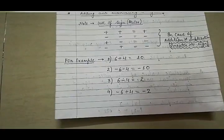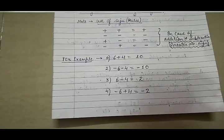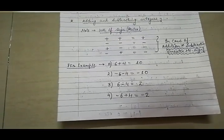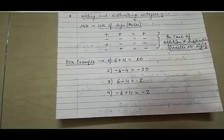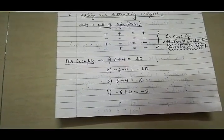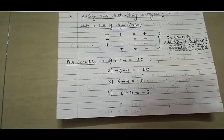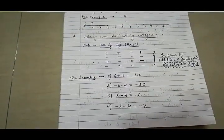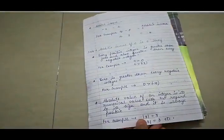Next example: 6 minus 4. One integer is positive and another is negative, so plus minus is minus, therefore 6 minus 4 is 2. Next example: minus 6 plus 4. Plus minus is always minus, so 6 minus 4 is 2. Since minus 6 is the greater number and it carries the minus sign, our answer comes as minus 2. I hope this is clear. These rules were also covered in class 6.